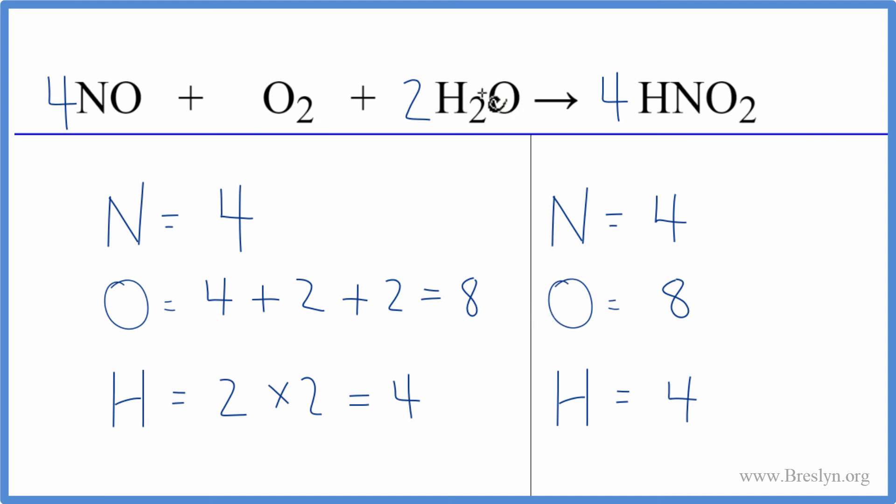So the key here, keep your oxygen straight, make sure you carefully count those up, and then just work through it trial and error. This is Dr. B with the balanced equation for NO plus O2 plus H2O yields HNO2. Thanks for watchin'.